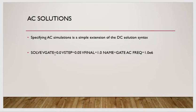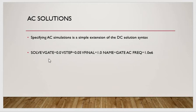For AC solutions, you can write 'solve ac frequency=1e6' — meaning 1 MHz — along with vgate, vstep, vfinal, and name=gate. This calculates AC solutions and is useful for computing capacitance as a function of gate voltage in your simulations. You can see the syntax on the slide.